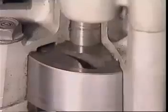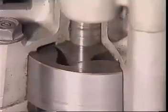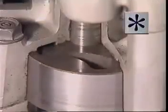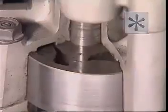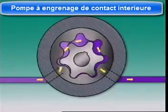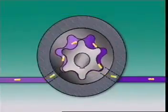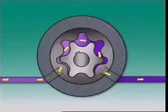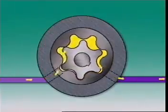As they turn, the volume between them increases. This larger volume lowers the pressure at the pump inlet. Outside atmospheric pressure is then higher. This forces oil into the pump and it fills the spaces between the rotor lobes.